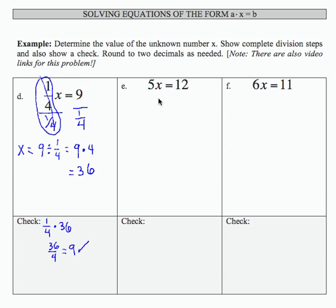For the next one, 5x equals 12. Again, I'm going to divide both sides by 5 because that gives me, on the left-hand side, a form of 1. So 5 over 5 will cancel. And I get x equals 12 over 5 as a fraction result, I would be finished.